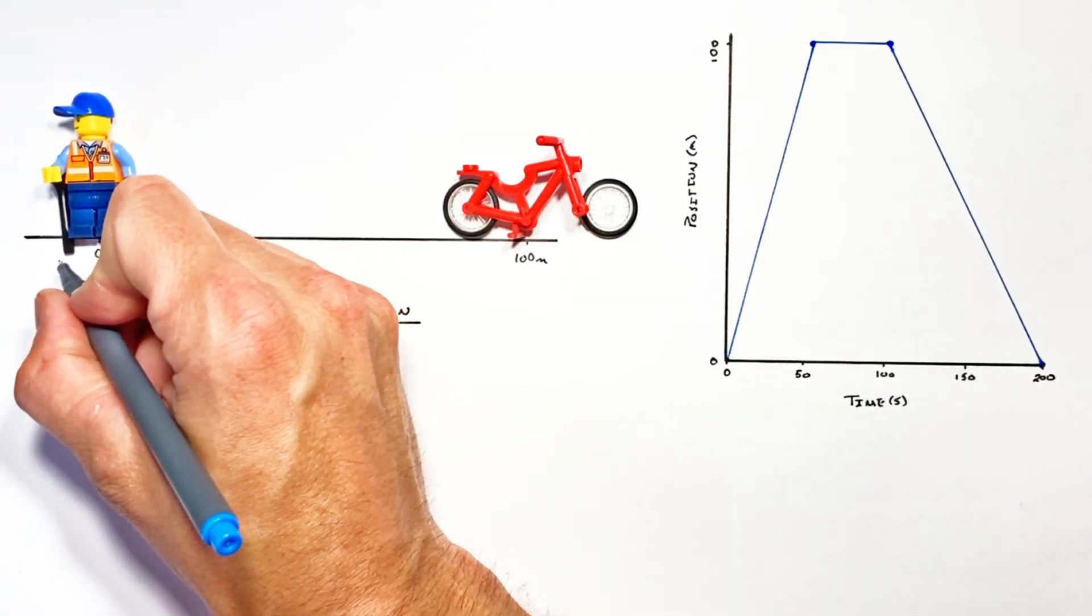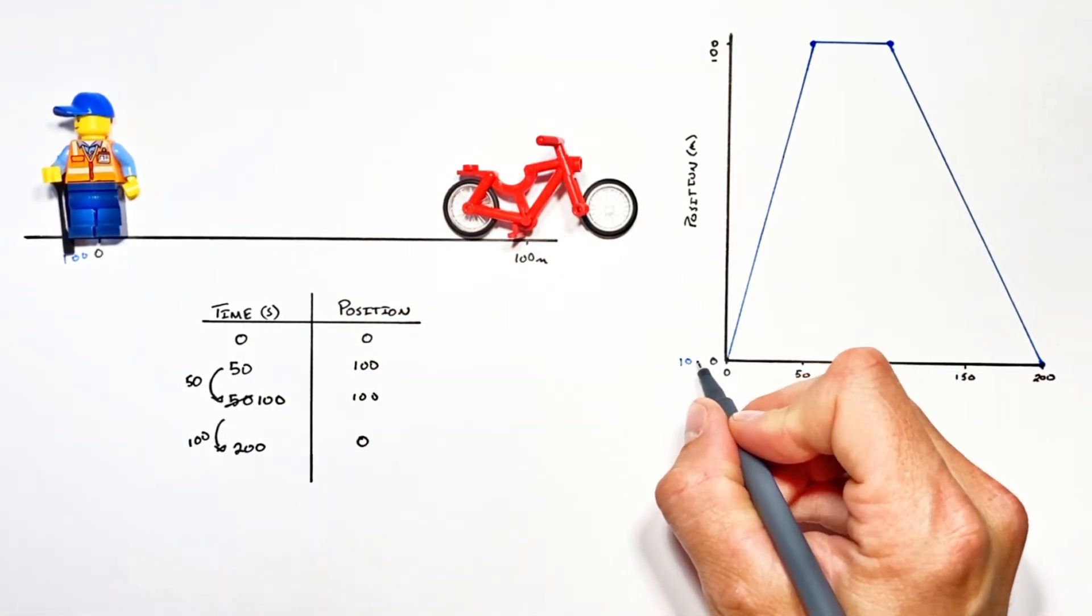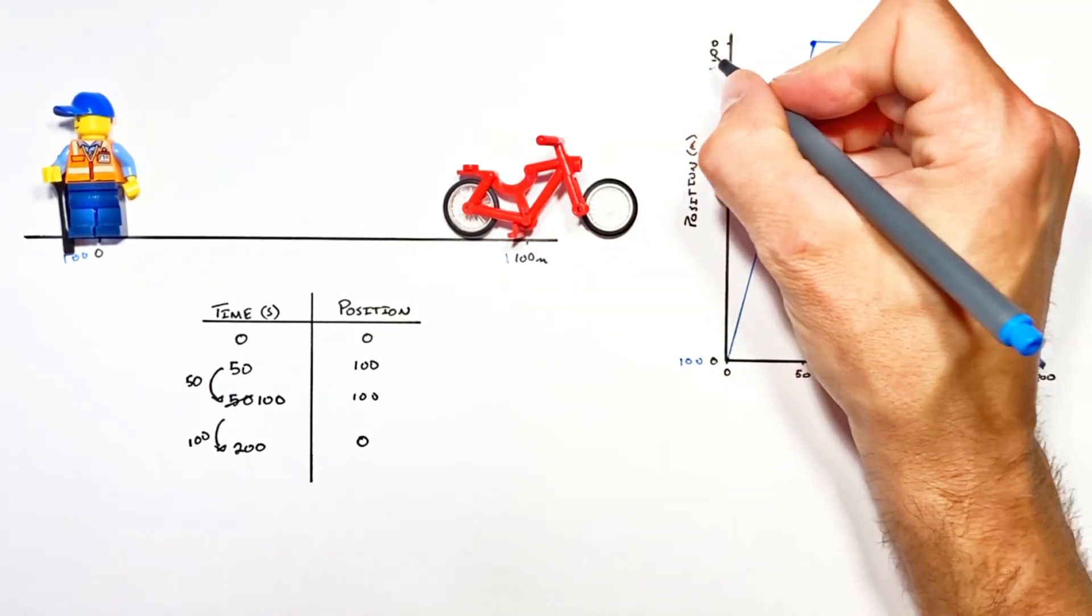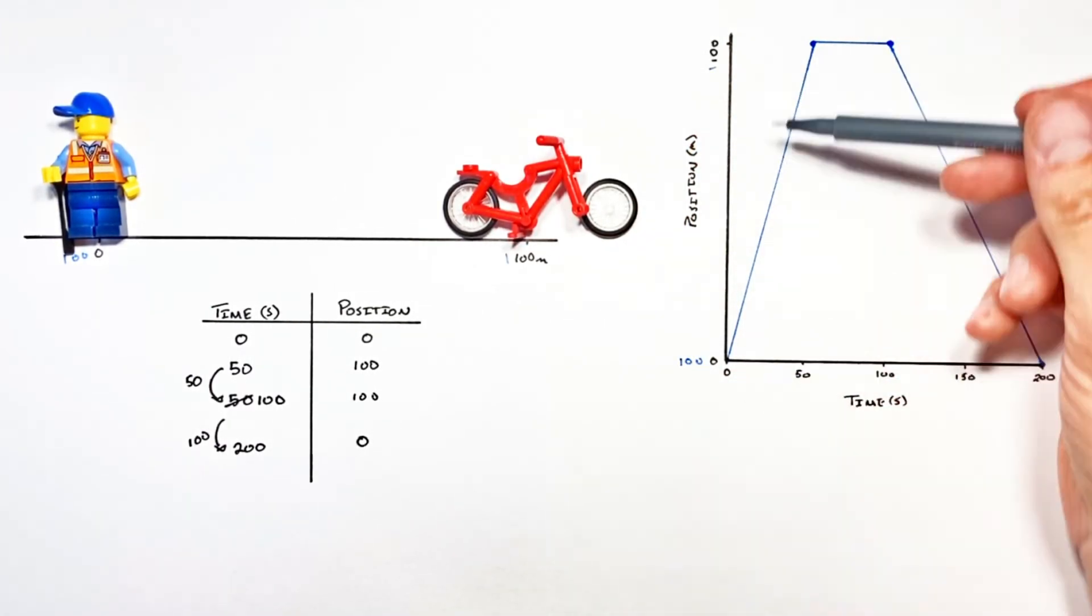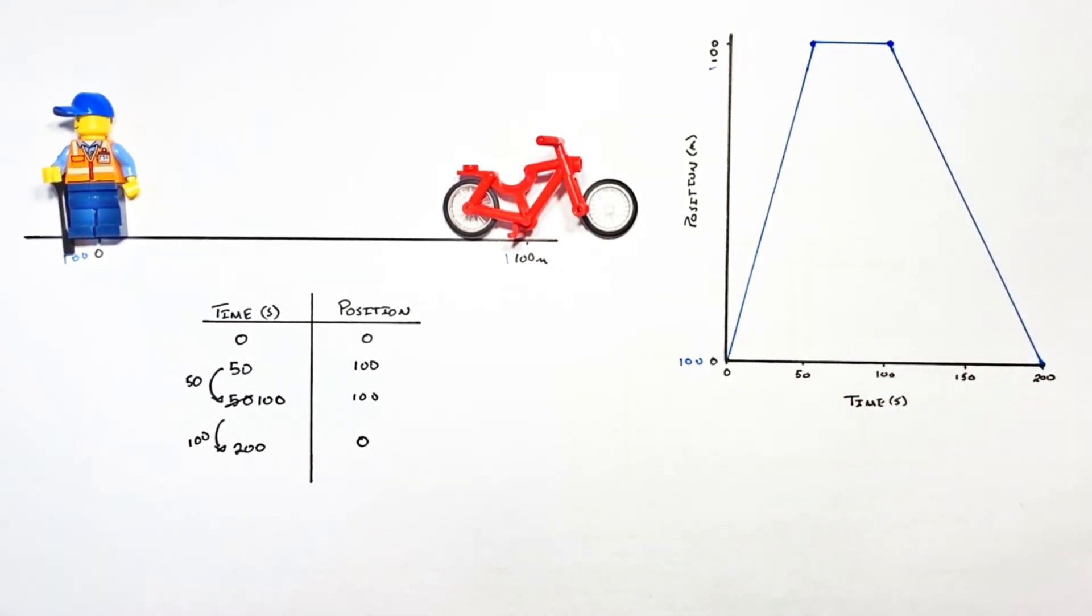It doesn't change the shape of this graph if we had chosen to call this some ridiculous number like maybe a position of 1000. Well that would have simply changed this initial value, we would have had 1100 there, that would have made that 1100. It doesn't change the shape of the graph, all it would do is shift that graph up or down. If you look at these two different lines you'll notice they have different slopes.